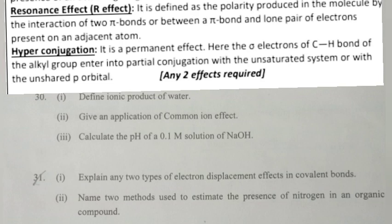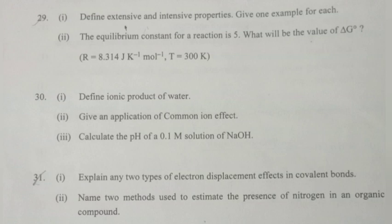Hyperconjugation: It is a permanent effect. Here the sigma electrons of C-H bond of the alkyl group enter into partial conjugation with the unsaturated system or with the unshared p orbitals. Write any two effects.